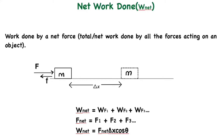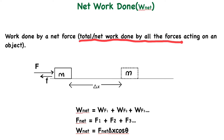In this video we're going to talk about the net work done. What is net work done? It's the sum of the work done by the forces. Each and every force acting on an object has its work done, whether it's zero or more than zero. The net work done is the sum — the work done by the net force, or the total work done by all the forces acting on an object.